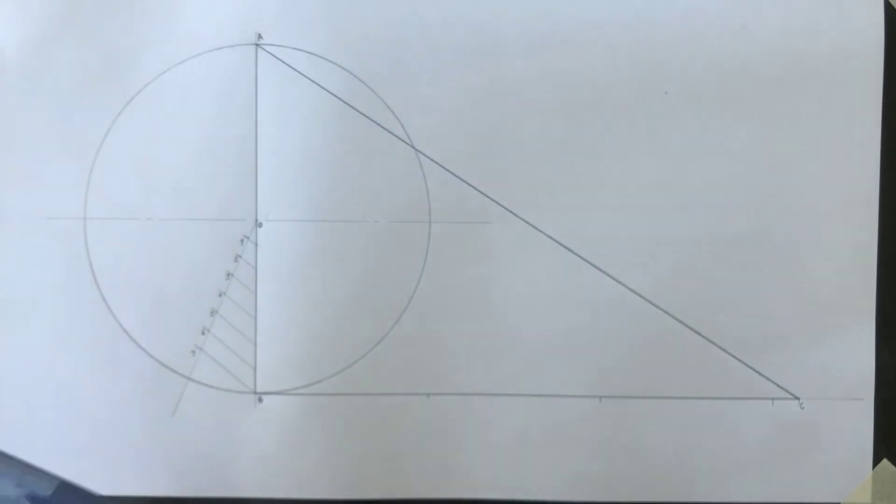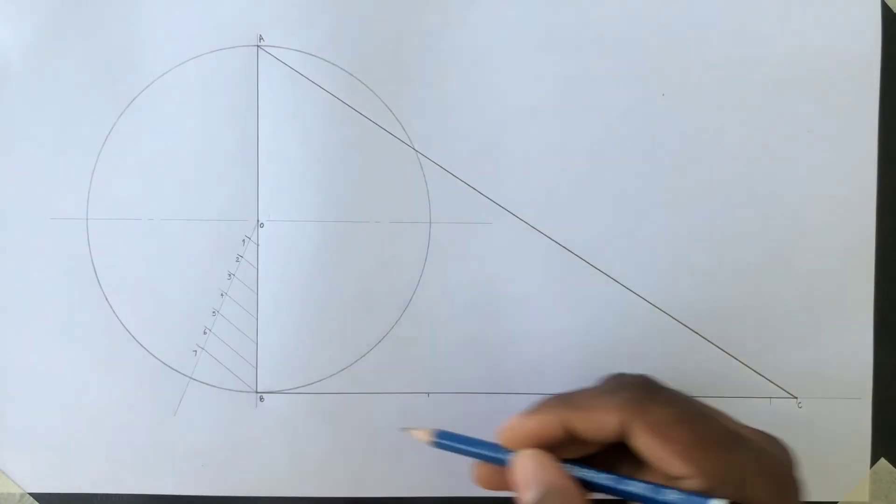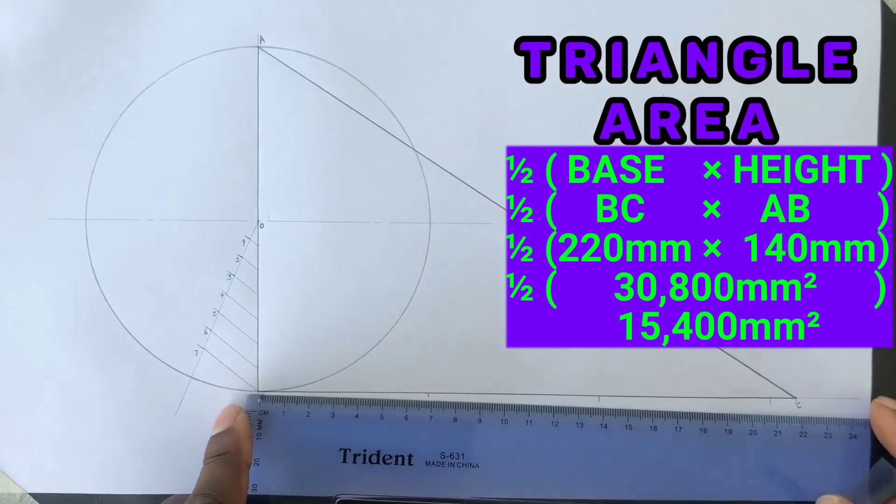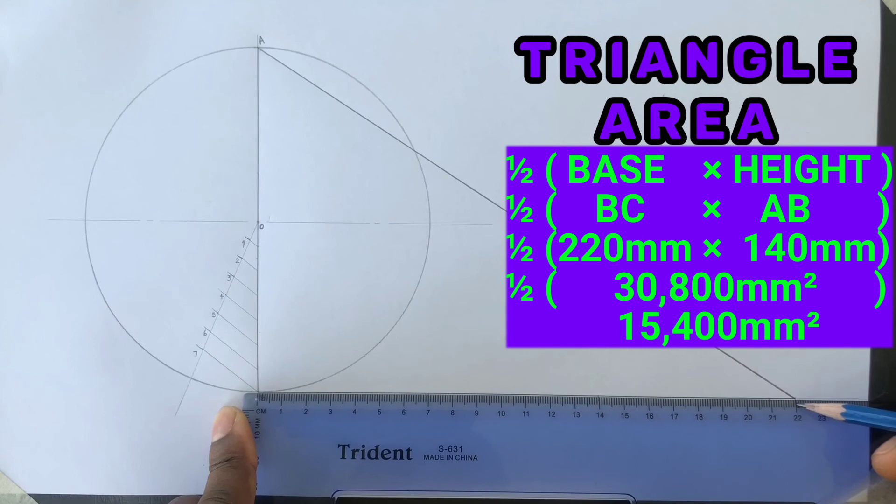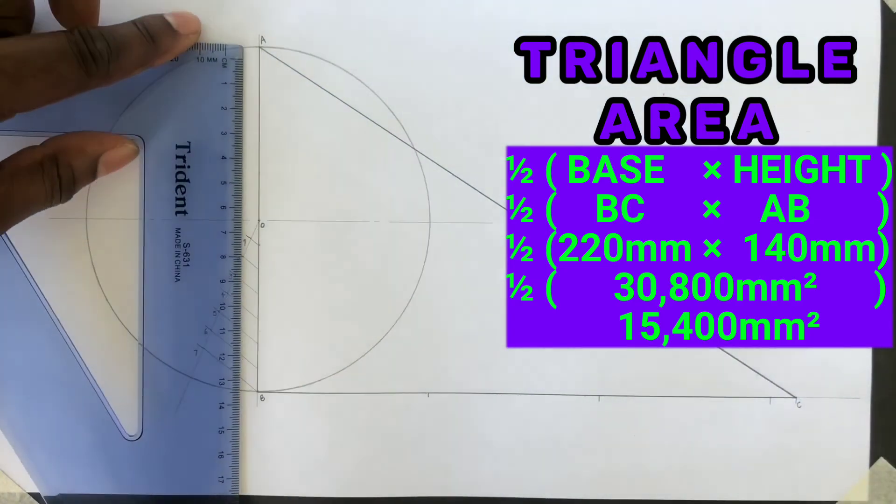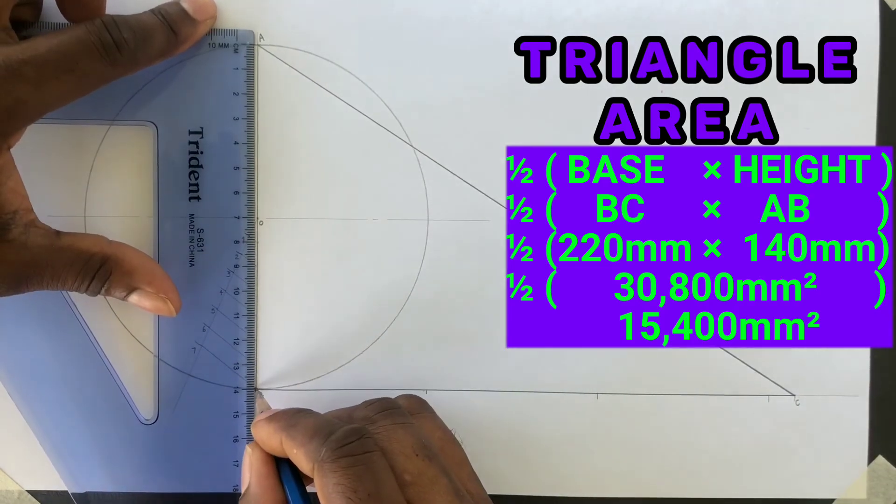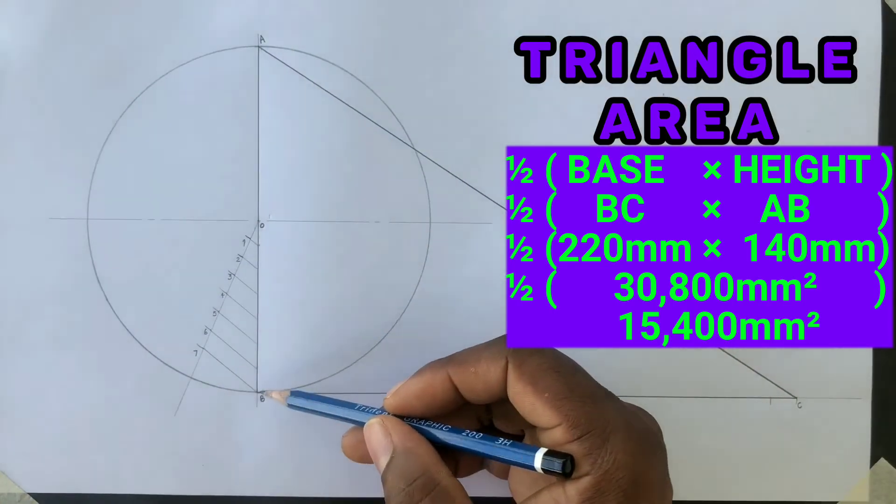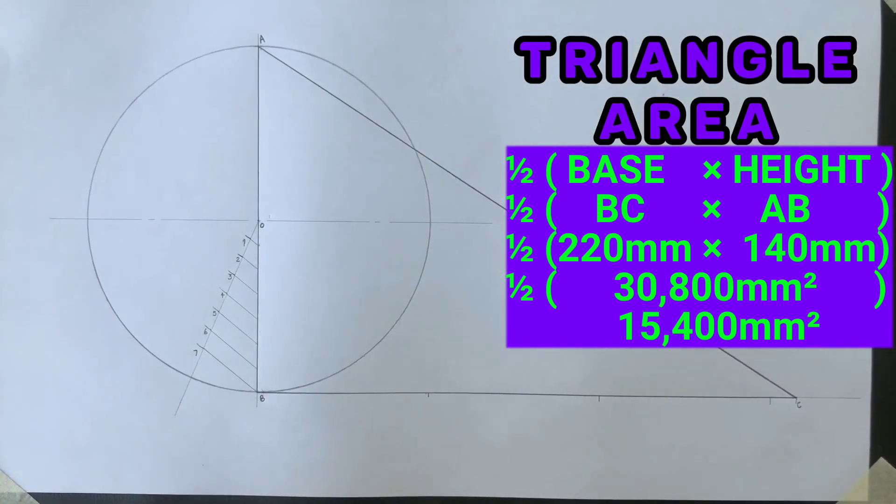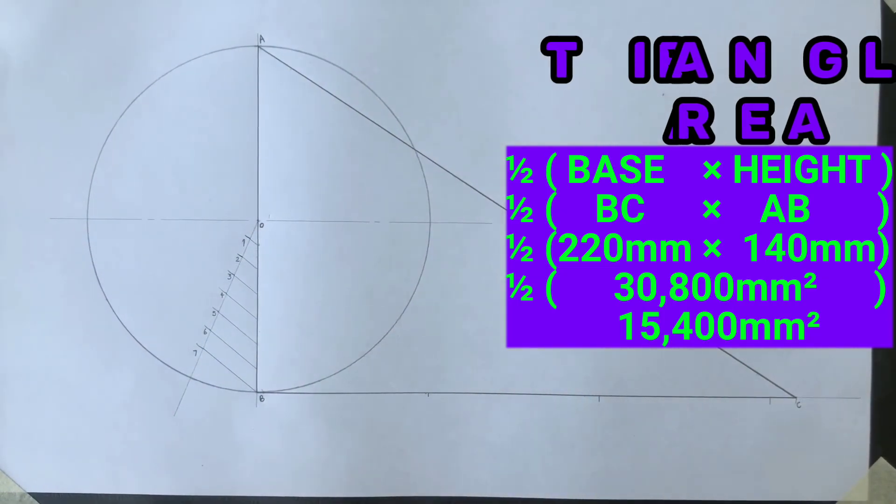You can now use your height AB and base BC to calculate the area of this triangle. If you measure the base, you will get 220 millimeters. And if you measure the height AB, you will get 140 millimeters. Now using the formula half base times the height, the calculated area of this triangle is 15,400 millimeter square.